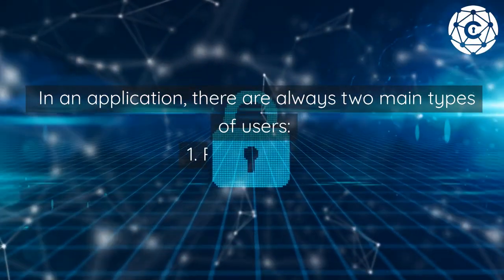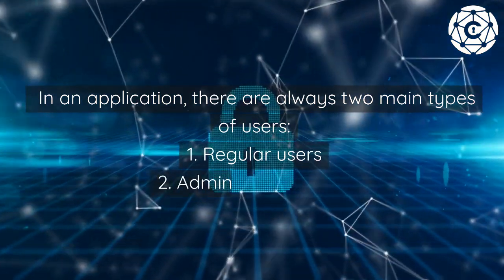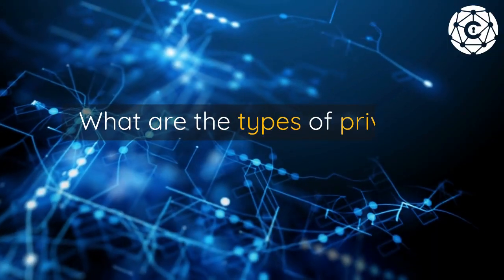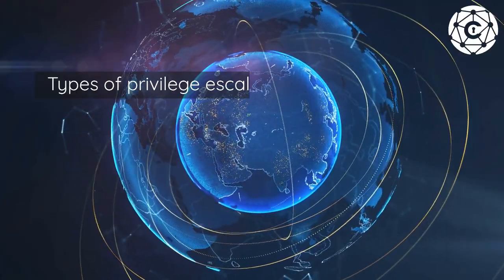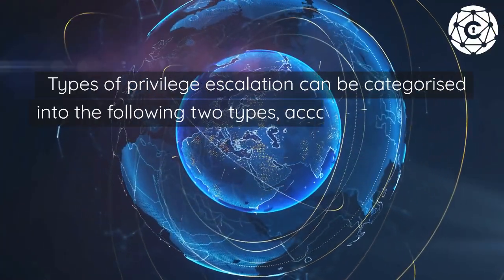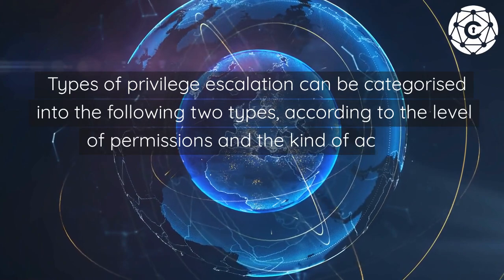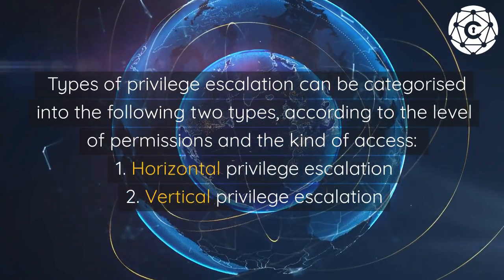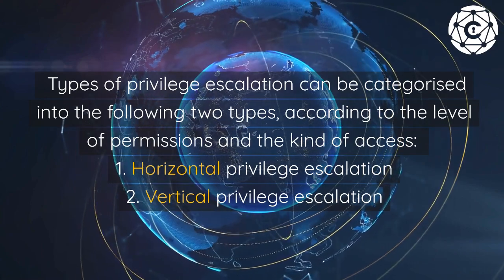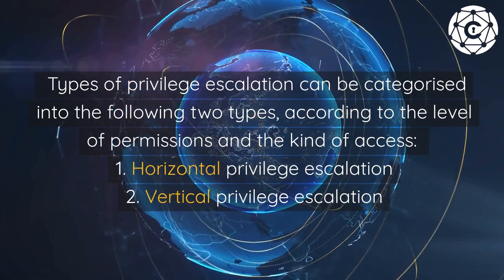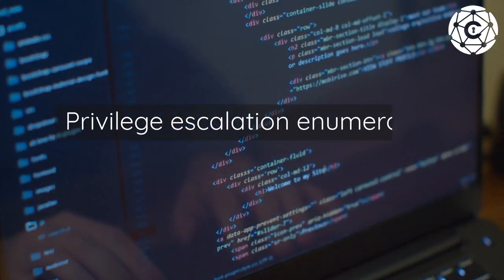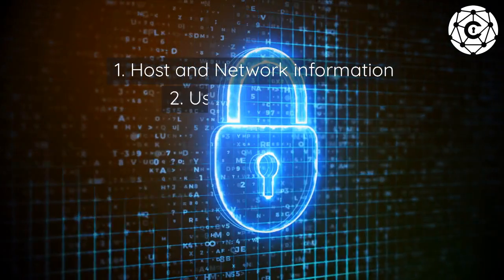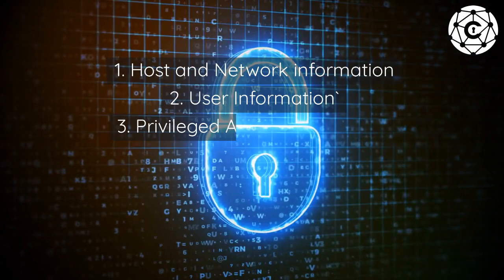The two types of users are: one, regular users; two, administrative users. Types of privilege escalation can be categorized into two types according to the level of permissions and kind of access: one, horizontal privilege escalation; two, vertical privilege escalation.